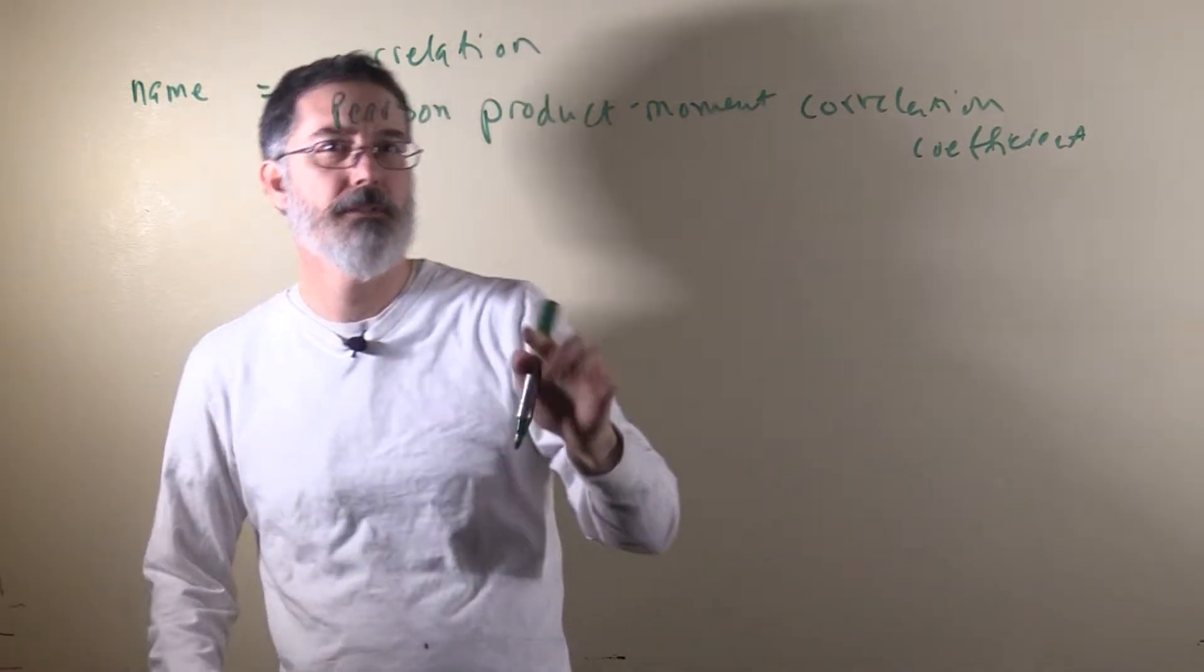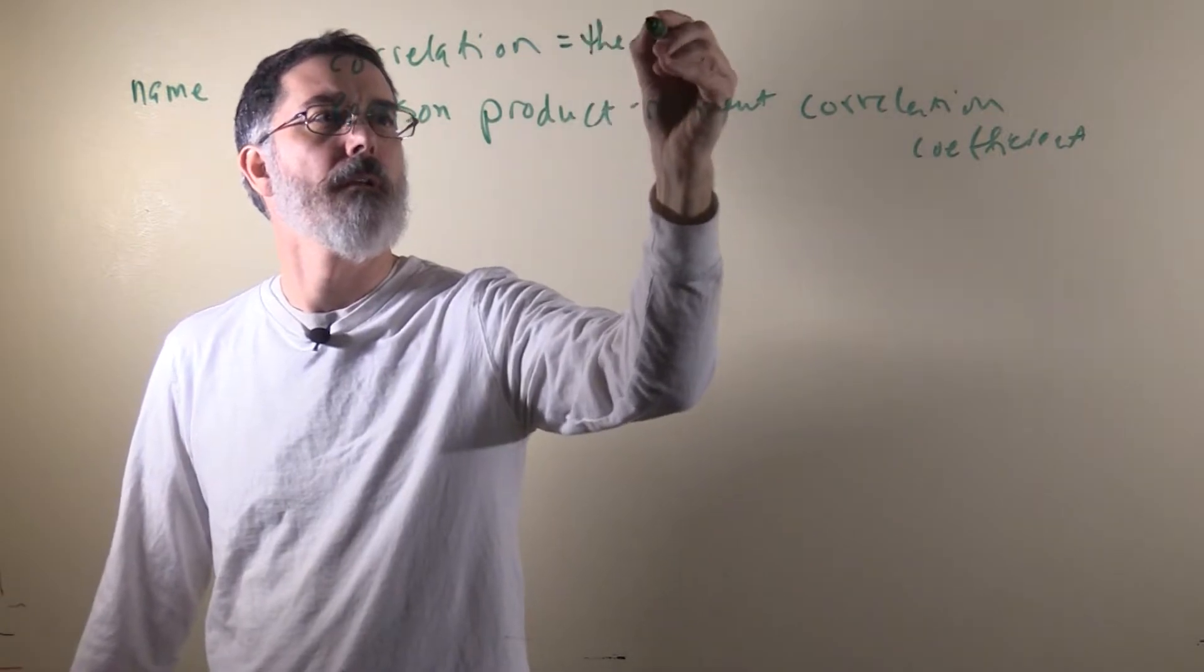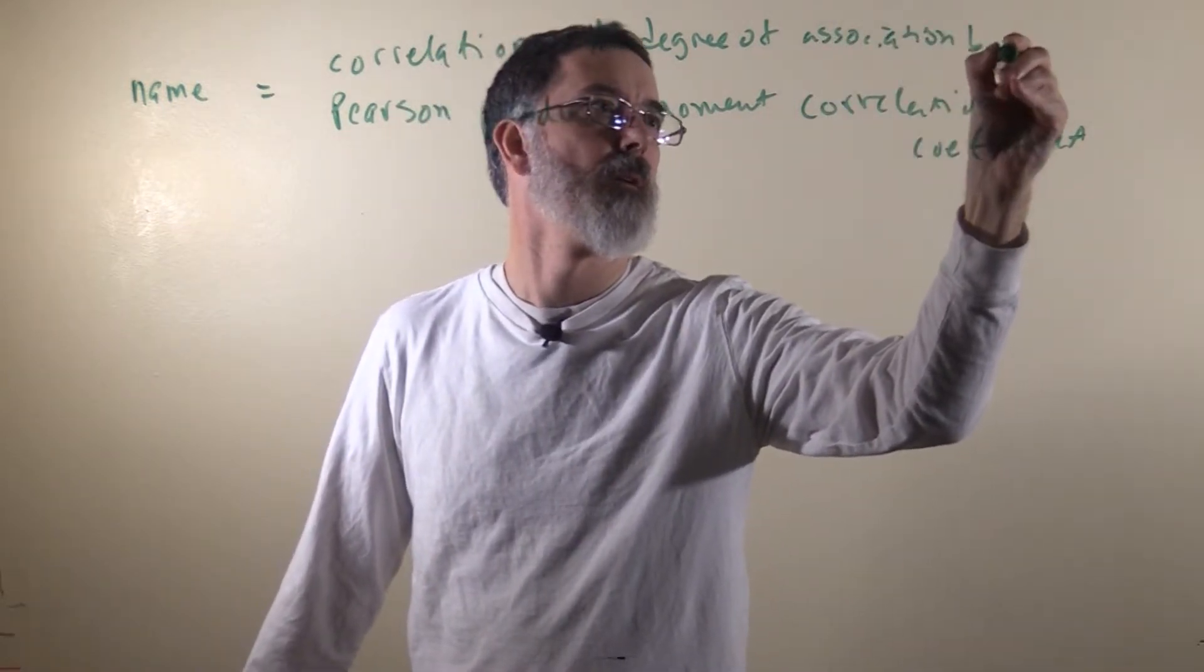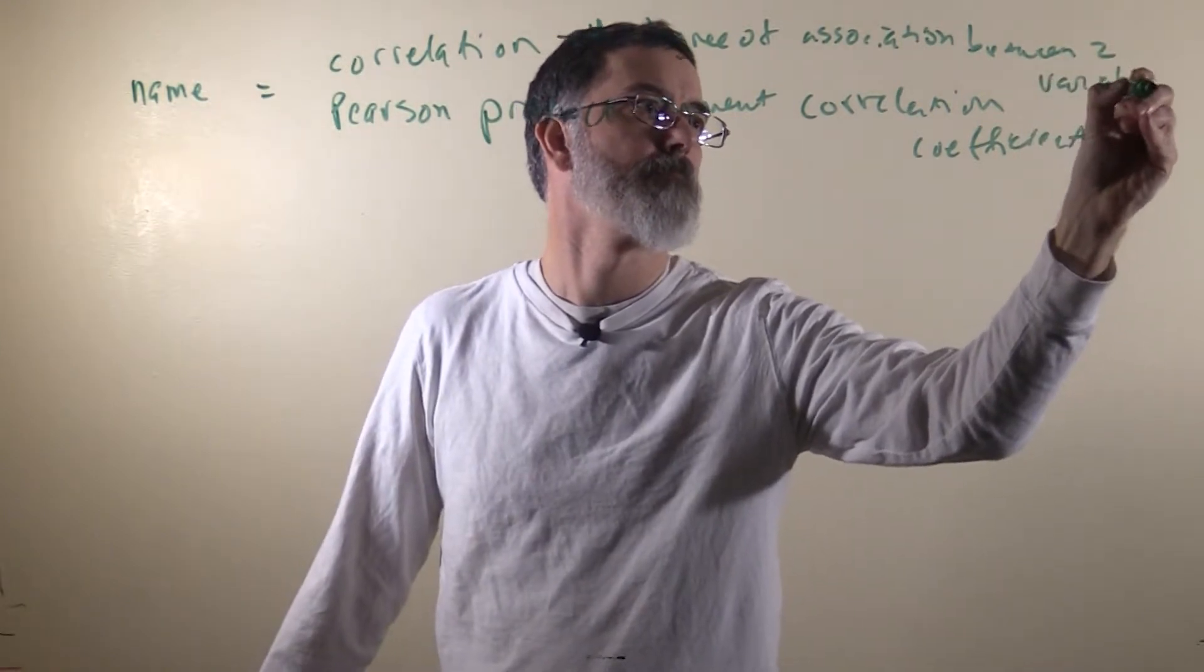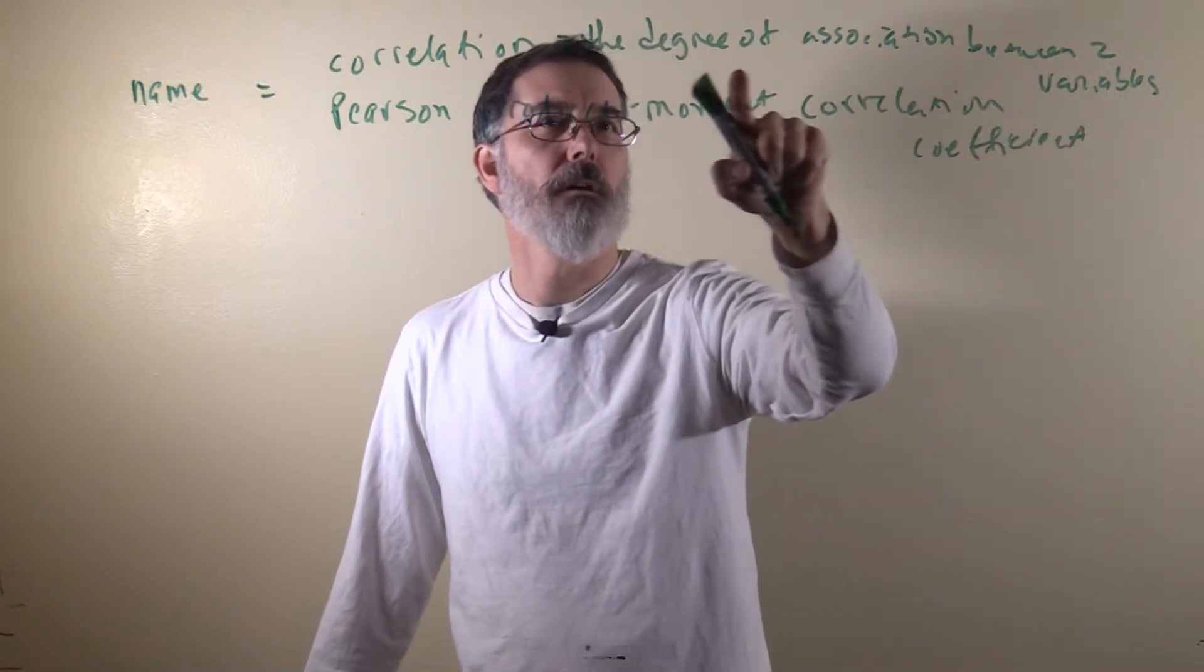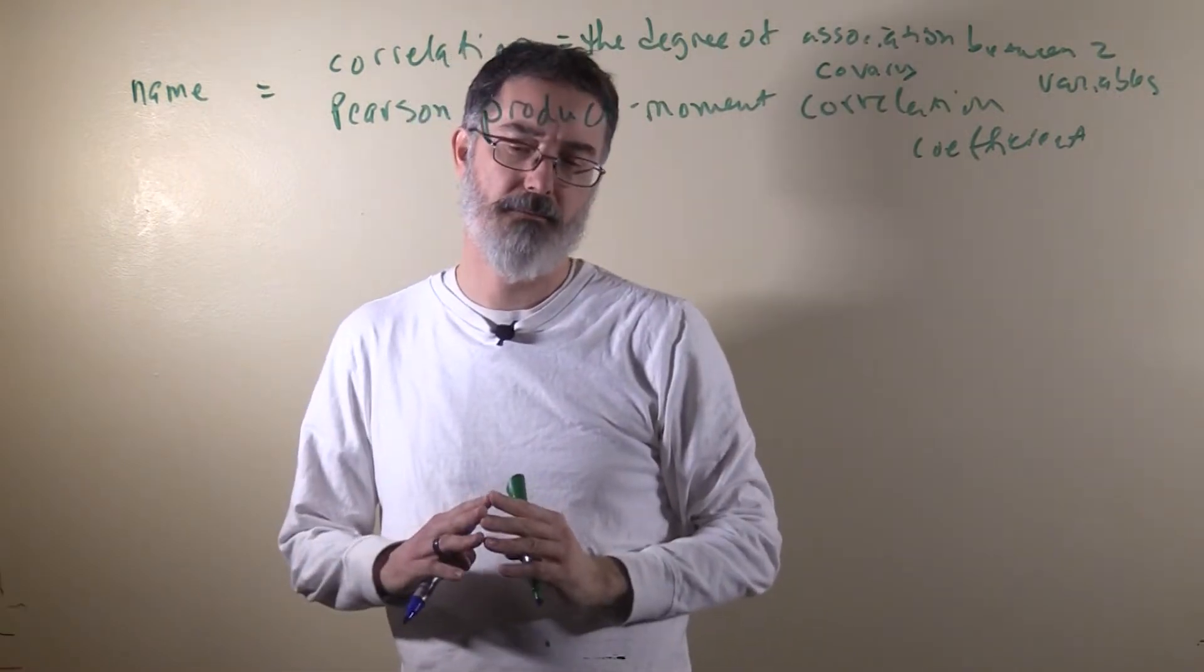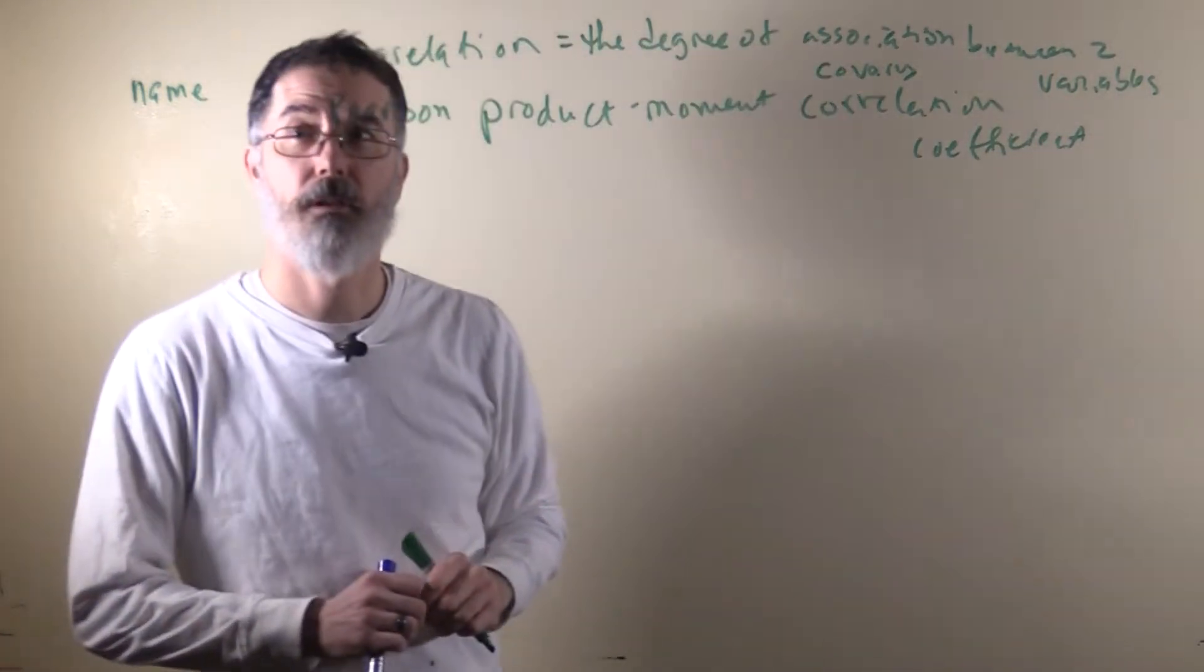A correlation tells us the degree of association between two variables. You could say how related two variables are, or how much they co-vary. A correlation just tells us if two variables are associated with one another, if they are related with one another.